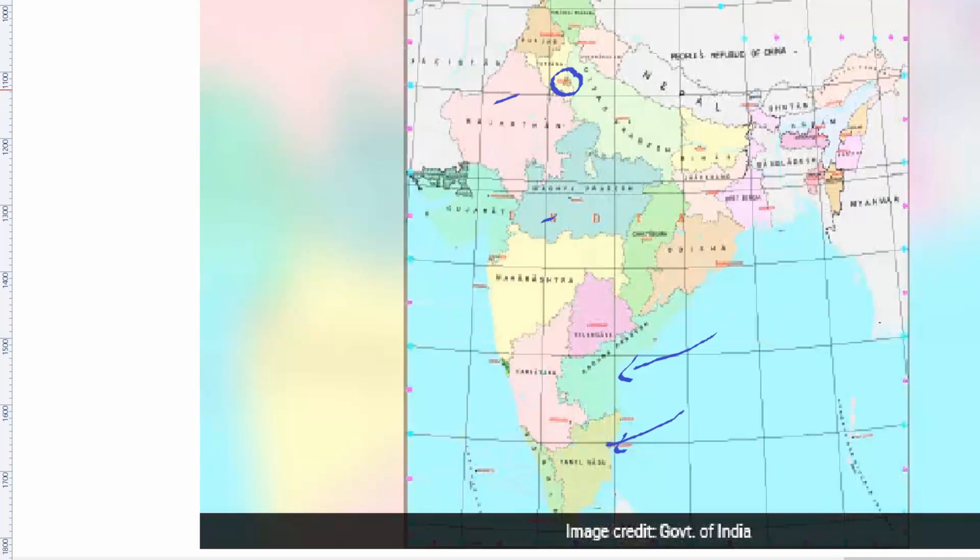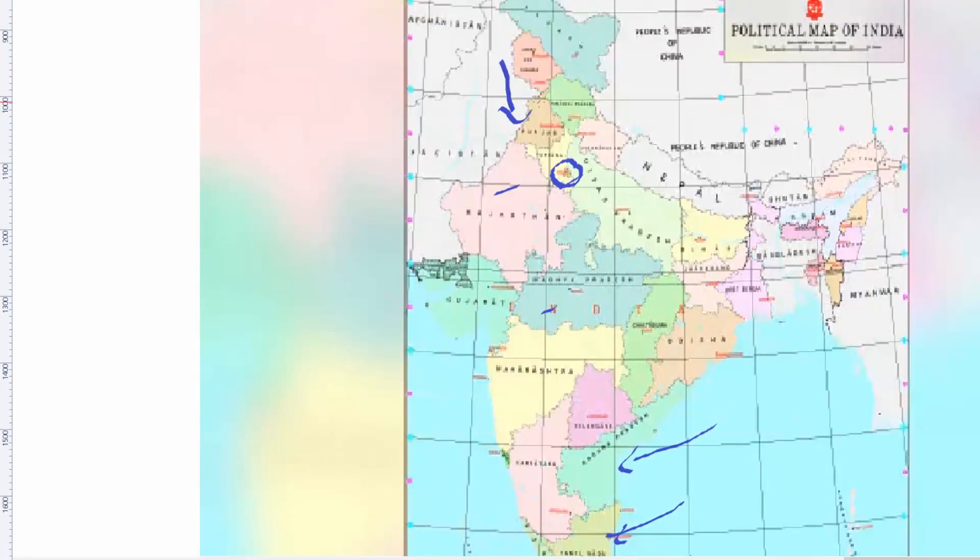Now let us have a detailed look at different factors that contribute to the smog condition in Delhi. Now there is so much hue and cry regarding stubble burning by farmers in Haryana and Punjab. That is not the only reason for the situation in Delhi.